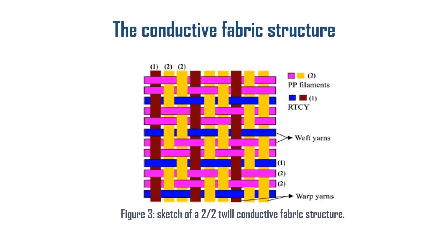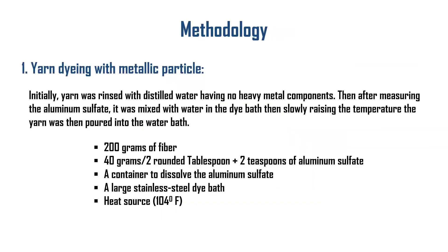The conductive fabric structure is a two-by-two twill rib. In the methodology, the first step is yarn dyeing with metallic particle. Initially the yarn was rinsed with distilled water having no heavy metal components. Then after measuring the aluminum sulfate, it was mixed with water in the dye bath and slowly raising the temperature, the yarn was poured into the water bath. The dye bath temperature was then slowly raised to 104 degrees Fahrenheit for 45 minutes, then returned to room temperature and the yarn was kept for drying.